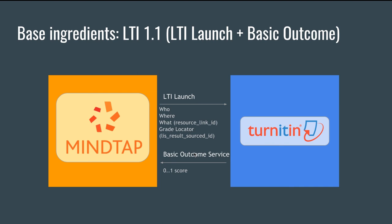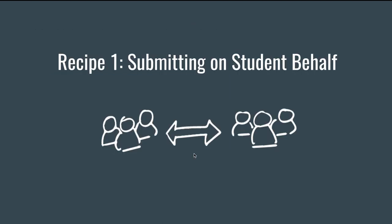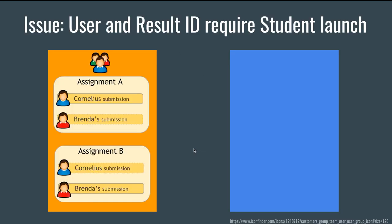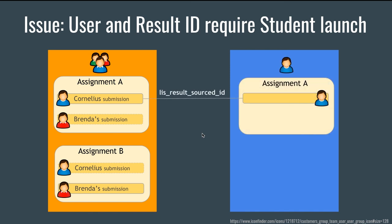We go through a few of the issues we had and how we solved them. One issue was that we wanted to let the instructor within Turnitin upload and submit a grade on a student's behalf — meaning the student has never actually launched the activity from MindTap. In the pure LTI 1.1 world this is not really doable because we are lacking the LIS result source ID. The tool provider would only discover an assignment when it's actually launched for the first time, and would only get the grade locator — the LIS result source ID — when the student launches.